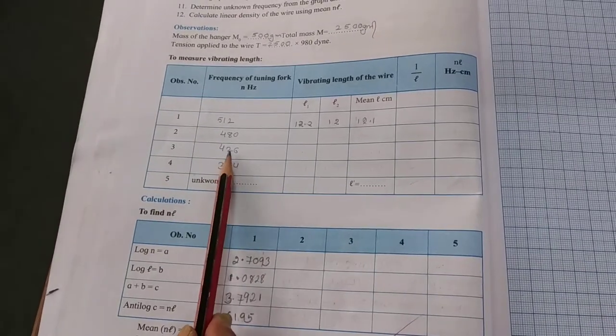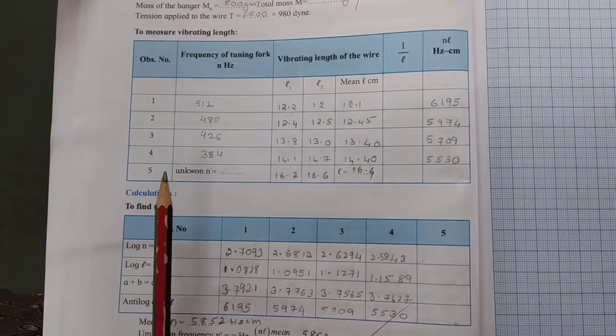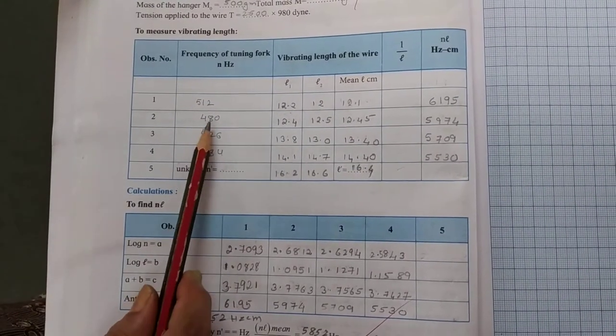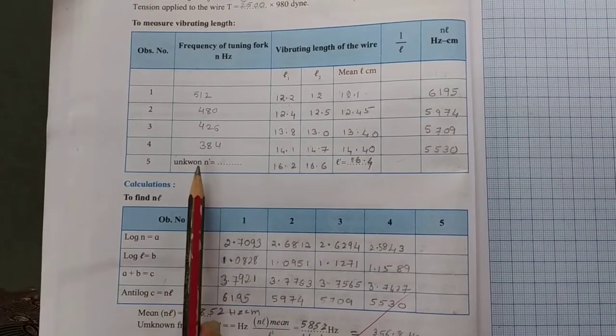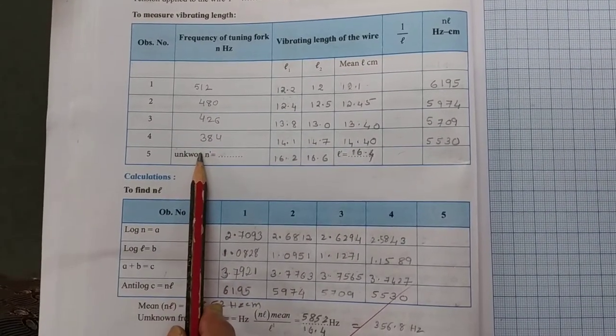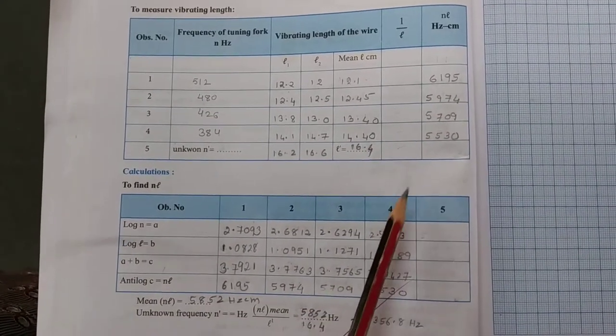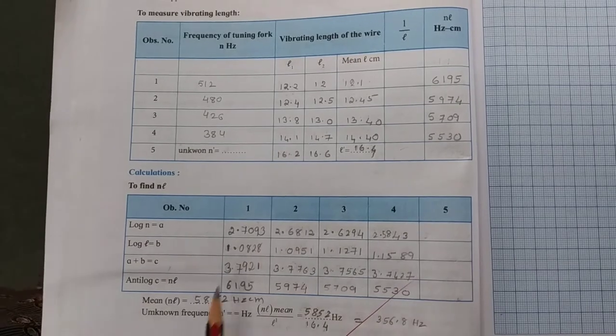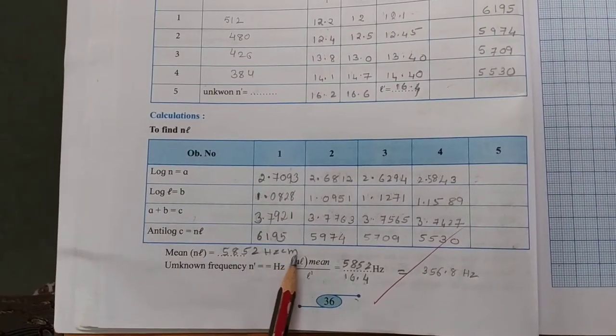Now, let us take the reading for 480, 426 and 384. For 480, we calculate nl, similarly for 426 and 384. These are the readings for nl. We take mean nl and we find it as 5852 hertz centimeter.